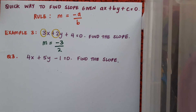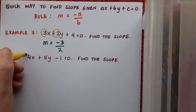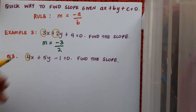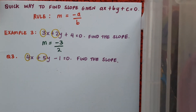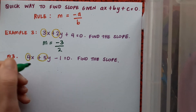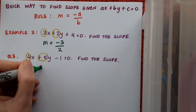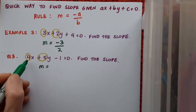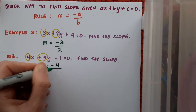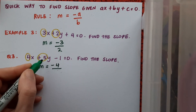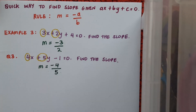I'll identify the x and y coefficients. The a value — the coefficient of x — and the b value — the coefficient of y. To get the slope, I change the sign of the x coefficient: that becomes minus 4. I don't change the y coefficient: that stays as 5. So the slope is minus 4 over 5. Job done.